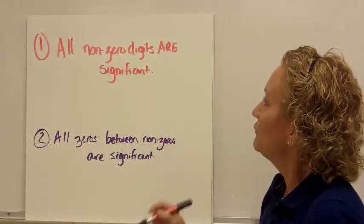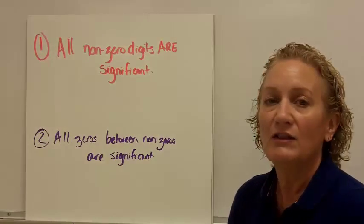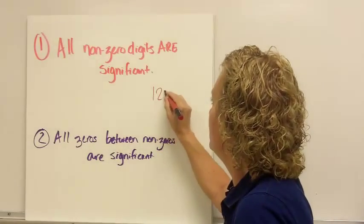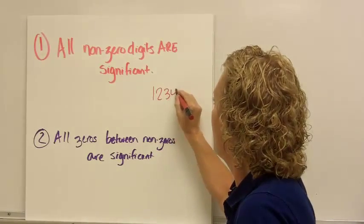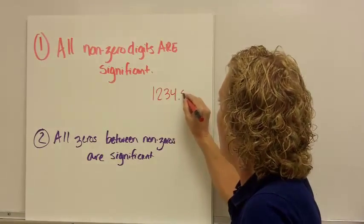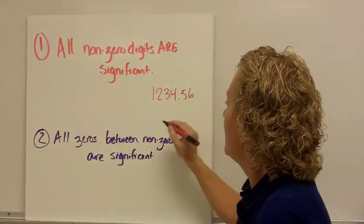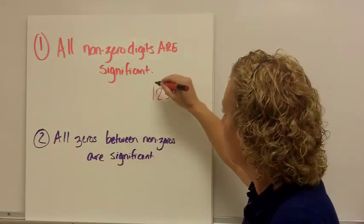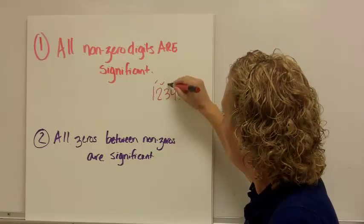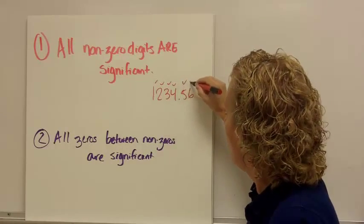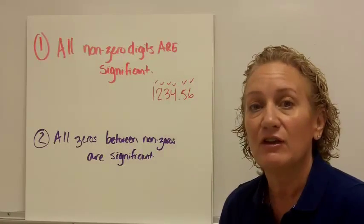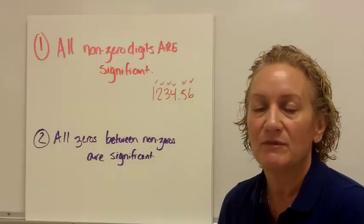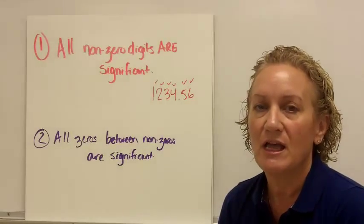The first rule is that all non-zeros are significant. So, if I find the number 1, 2, 3, 4, .56 — those are all non-zeros. So, you have 1, 2, 3, 4, 5, 6 — six significant figures. That's the easy one.